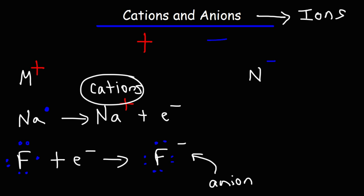Remember, cations are ions with positive charges. They have more protons than electrons. And anions are ions with negative charges. They have more electrons than protons.